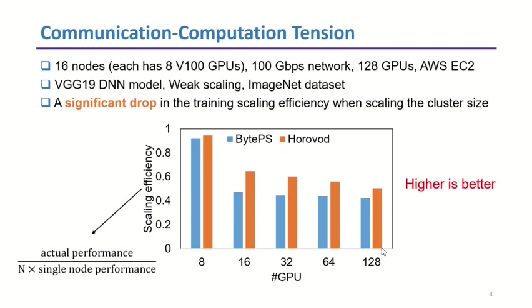To answer this question, we use up to 128 GPUs to train the VGG-19 model with the two most popular highly optimized Data Parallel architectures. We measure the change of scaling efficiency with different numbers of GPUs, and observe a significant drop when scaling the cluster size. Unfortunately, this communication-computation tension cannot be easily addressed by network upgrades due to the following reasons.